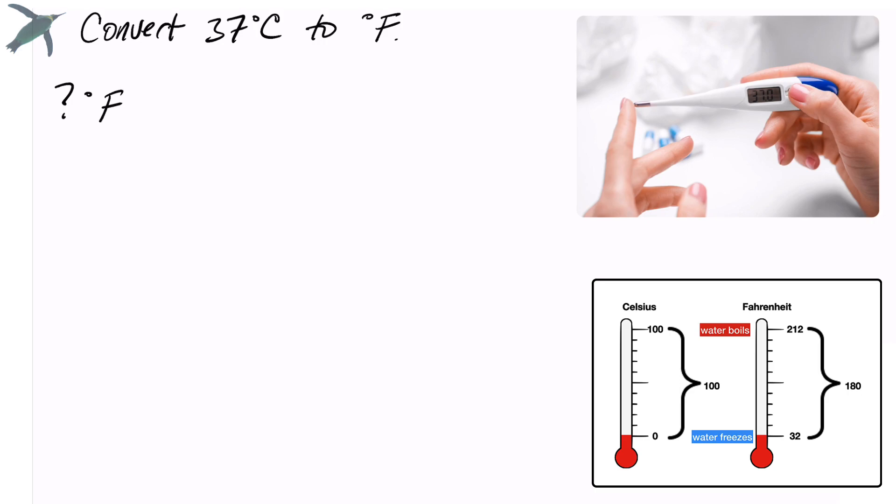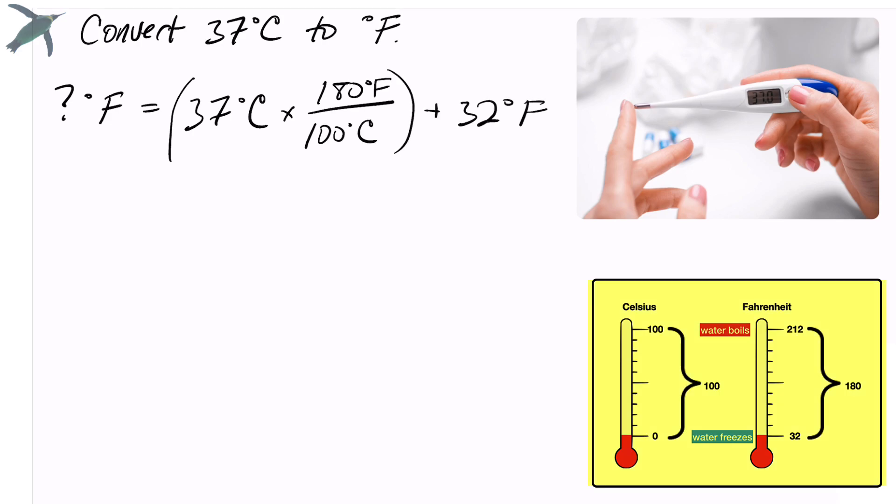Okay, here we go. How many degrees Fahrenheit is 37 degrees Celsius? I'm going to multiply by that conversion factor 180 over 100 plus 32 the offset. Celsius cancels.